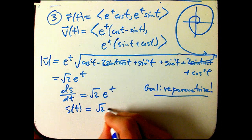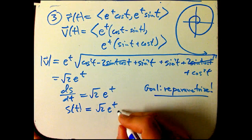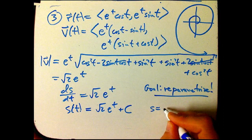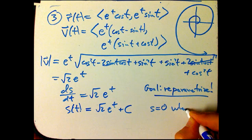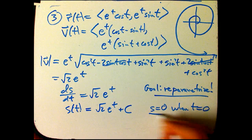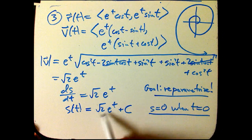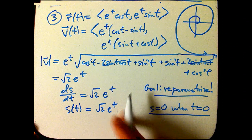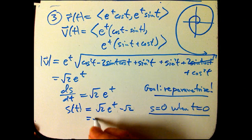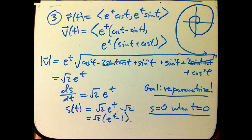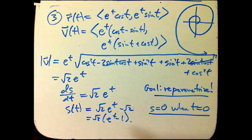Well, a constant times e to the t, the antiderivative of that is just itself, plus a constant. And let's go ahead and try to make sure that s equals zero when t equals zero. We don't have to do it that way, but it's a reasonable choice. So when t equals zero, this is going to be root two, so this is going to have to be minus root two, or I'm going to factor out the root two. So here's the next step.